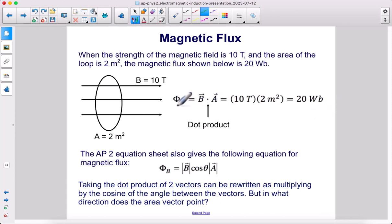Let's use our equation. The flux equals the magnetic field times the area of the loop. So that would be the strength of the field is 10 tesla, the area of the loop is two meters squared. Therefore, the amount of magnetic field going through the loop is 20 Webers. That's the flux.